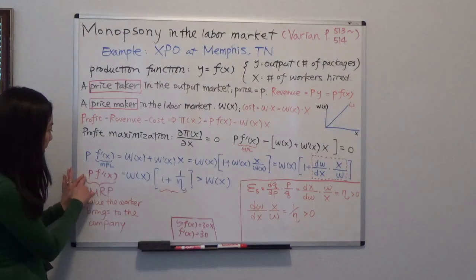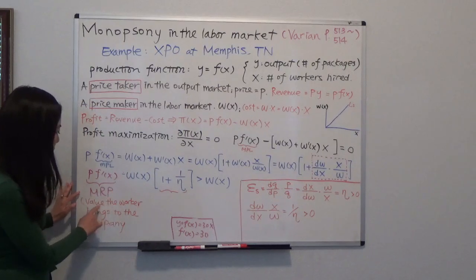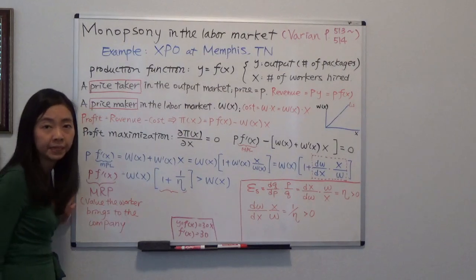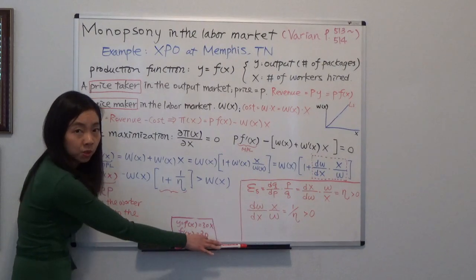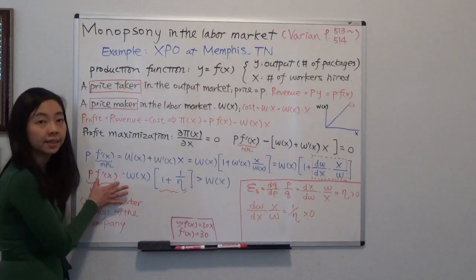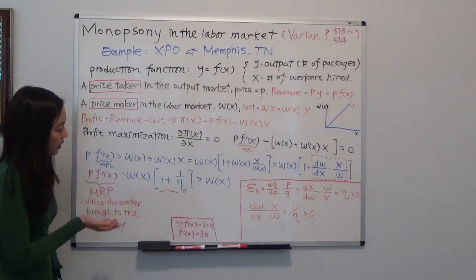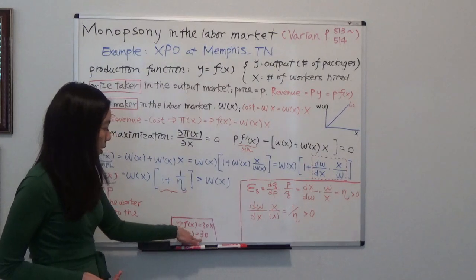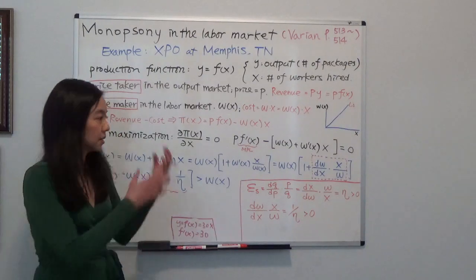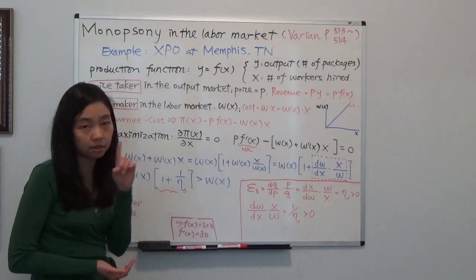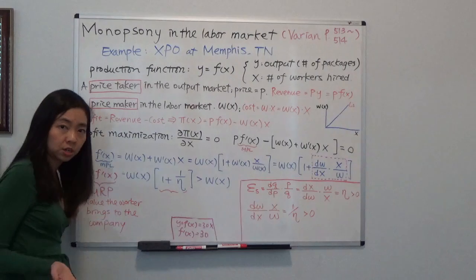But for now, you know, the left-hand side is price times the marginal product of labor. So that gives you the value that workers bring to the company. Why is that? So you can see that F'(X) is the productivity of this worker. Multiply that by the price the company can charge for this service. So, for example, if in each hour, each worker can pack 30 packages. And for each package, XPO say if they can charge Verizon $1 for each package service they provide, then the value this worker provides